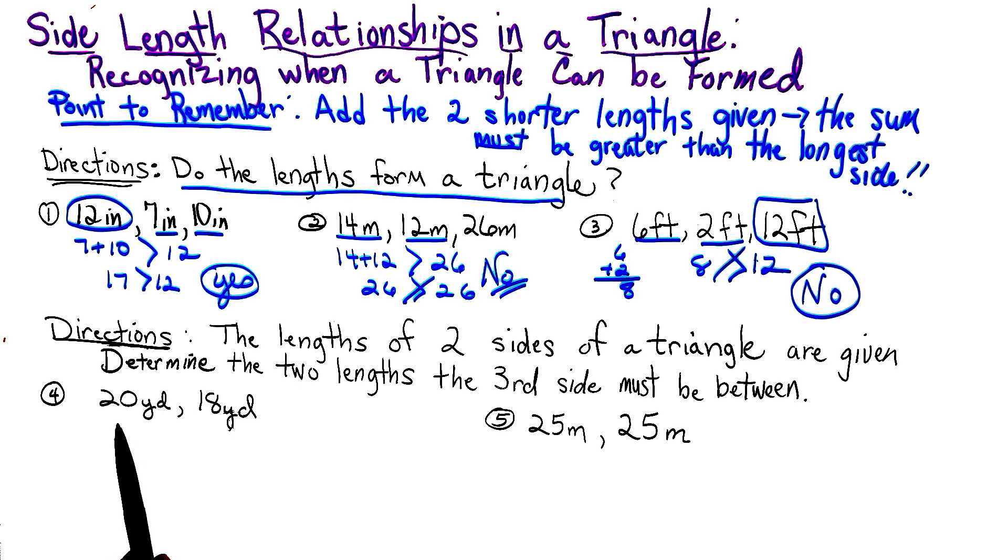So the second set of directions. The lengths of two sides of a triangle are given. Determine the two lengths the third side must be between. So when we say between, we're going to have our x, and now we're going to find the smallest number it could be, and we're going to find the largest number that it can be.